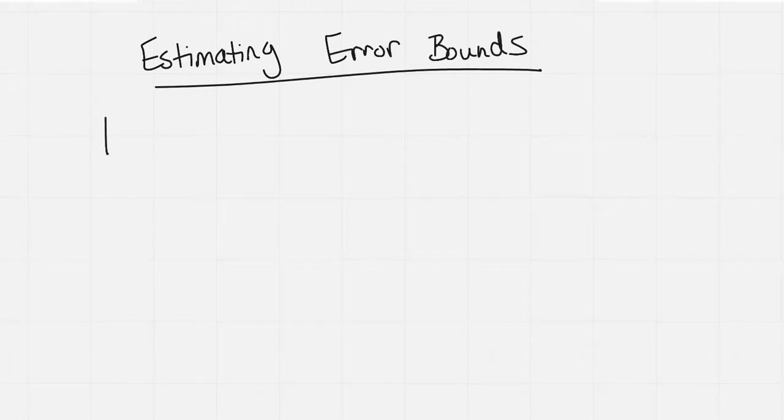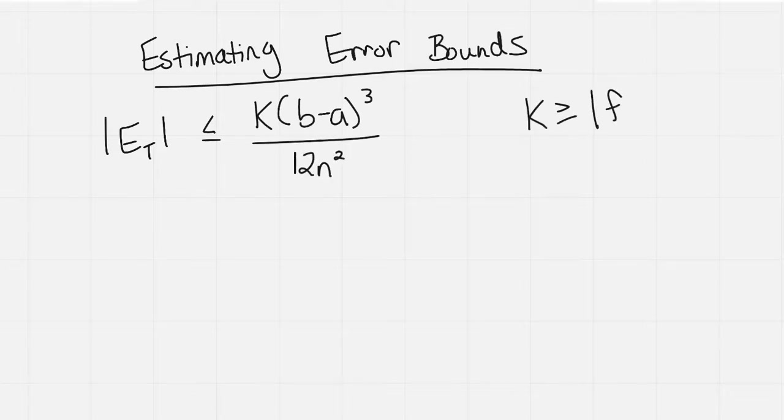The absolute value of the error of a trapezoidal rule is less than or equal to capital K times b minus a cubed all over 12n squared, where K has to be a value greater than or equal to the absolute value of the second derivative of f of x.